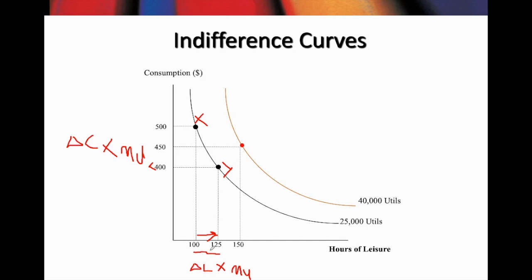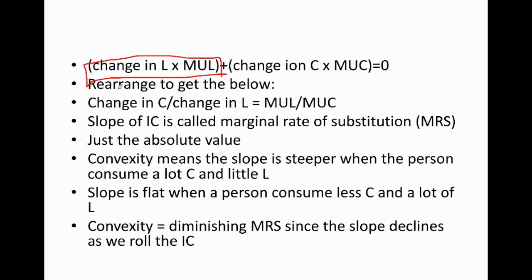These two expressions added together equal zero because moving from X to Y along the same indifference curve means changes are cancelling out one another. From this, rearranging gives us: ΔC / ΔL = MU_L / MU_C. This is important because this is what we call the marginal rate of substitution — the slope of the indifference curve.